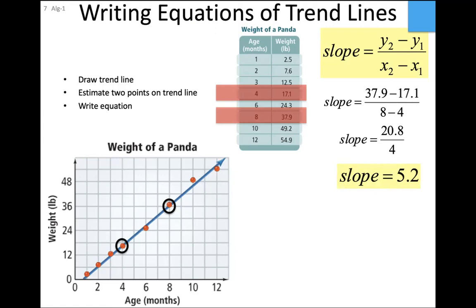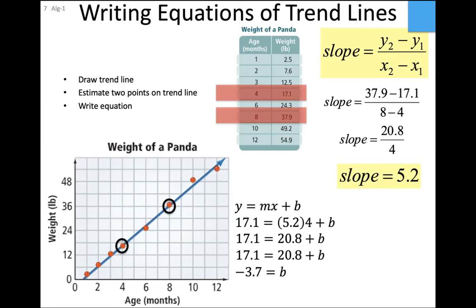Once you have the slope, calculate the y-intercept. Choose one of the two red points — I'll use (4, 17.1). X is 4, Y is 17.1, slope is 5.2. Plug into the equation and solve for b: 4 times 5.2 is 20.8, subtract 20.8 from both sides, and b equals negative 3.7. So the slope is 5.2 and the y-intercept is -3.7. The equation of the trend line is y = 5.2x - 3.7. That equation will help us interpolate and extrapolate.